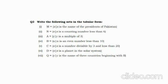Question number 3: write the following sets in tabular form. (1) Set M — you have to write all the names of the presidents of Pakistan: Iskandar Mirza, Ayub Khan, Yahya Khan, General Ziaul Haq, Farooq Leghari, Pervez Musharraf, Asif Ali Zardari, Mamnoon Hussain.